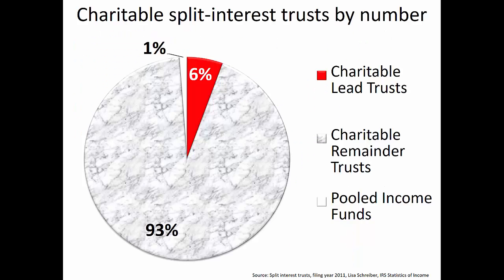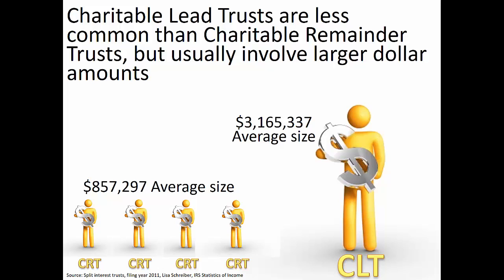Charitable planners are more likely to work with charitable remainder trusts than charitable lead trusts simply because charitable remainder trusts are much more common. Charitable lead trusts account for only 6% of all split interest charitable trusts — which include charitable remainder trusts, charitable lead trusts, and pooled income funds. Seeing what a small fraction of total split interest charitable trusts that charitable lead trusts represent might lead one to believe they are insignificant, but this idea is mistaken. Although charitable lead trusts are less numerous, they are much larger — the typical charitable lead trust holds more than three and a half times the assets of the typical charitable remainder trust.